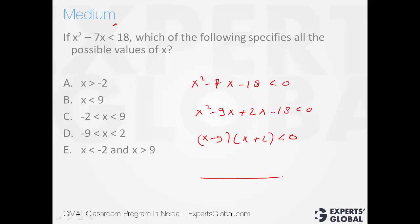Plot it on the number line. You will have minus 2 as one node, positive 9 as the other. Rightmost value would be positive and then alternate negative positive. We need negative values. So the value has to be between minus 2 and positive 9. The right answer here is option C.